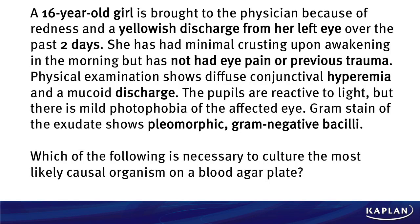With this question: a 16-year-old girl is brought to the physician because of redness and a yellowish discharge from her left eye for the past two days. Notice what I bolded there. When you're dealing with symptoms of the eye, you've got to think of a lot of different possibilities. So one, it's red, but two, there's a discharge — yellowish. From both eyes? No, just one eye, the left eye. And how long has this been going on? Not months, not years — two days.